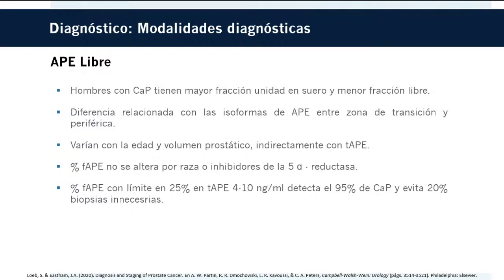El valor de corte del porcentaje libre que optimiza sensibilidad y especificidad depende del tamaño de la próstata. En hombres con antígeno de 4 a 10 ng/mL y glándulas prostáticas palpables, un límite del porcentaje de fracción libre del 25% detectó el 95% de los cánceres de próstata y evitó el 20% de las biopsias innecesarias. El porcentaje libre también puede predecir el riesgo de cáncer incluso con antígeno por debajo de 4 ng/mL, con especificidad comparable de hasta el 95%, sin requerir medición del volumen prostático. Se puede utilizar para asesorar a hombres con valores de antígeno entre 4 y 10 ng/mL.